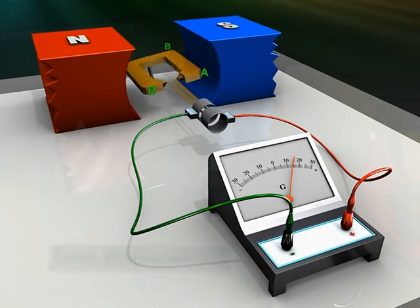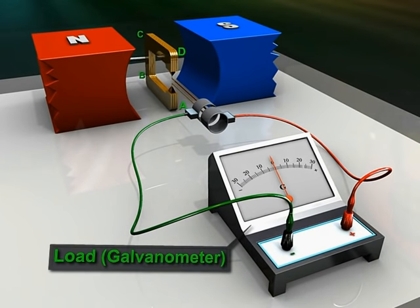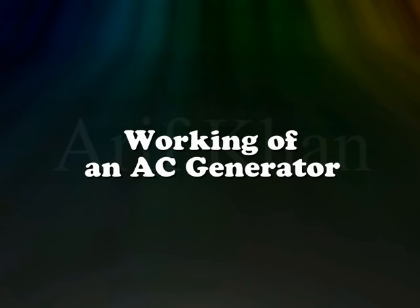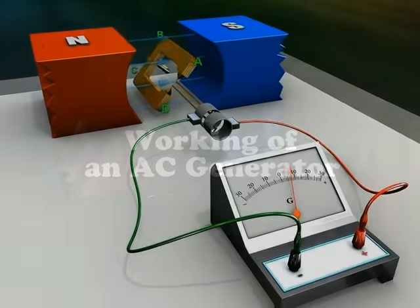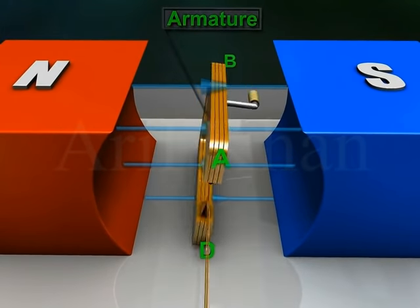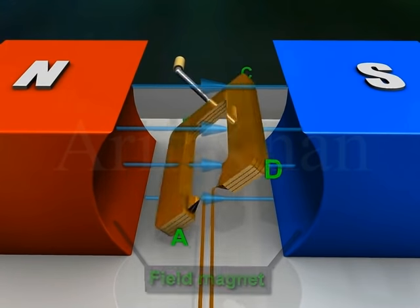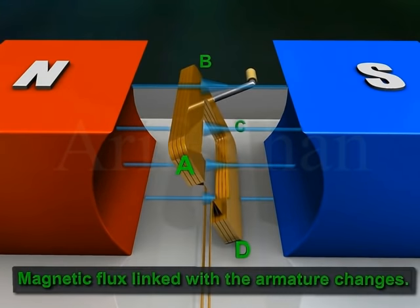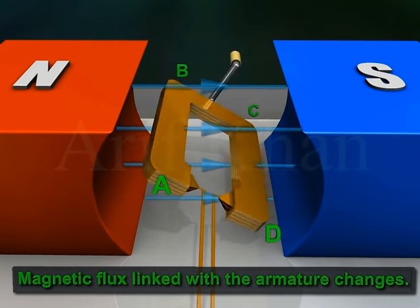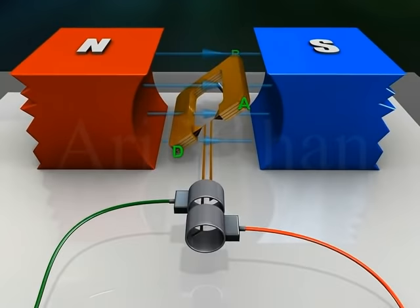The load may be a galvanometer. When the armature rotates between the poles of the field magnet, the magnetic flux linked with the armature changes continuously.